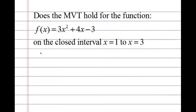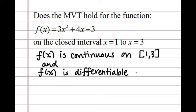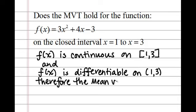Let's look at this from an algebraic perspective. Does the mean value theorem hold for this quadratic function on the closed interval? Since it's a quadratic, it's continuous throughout the entire domain and differentiable for all values of x. So we have continuity on the closed interval and differentiability between 1 and 3. The mean value theorem guarantees there's some value between 1 and 3 where the slope equals the slope of the secant line over the whole interval.